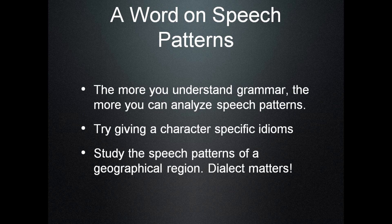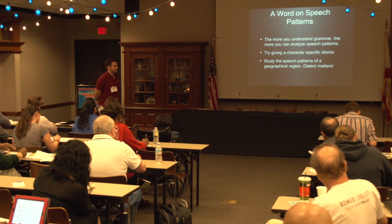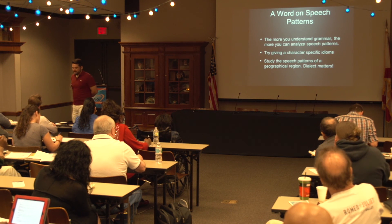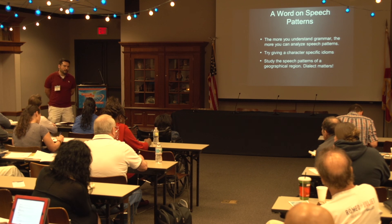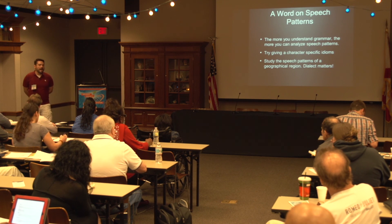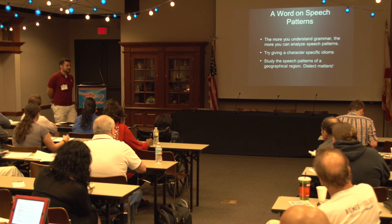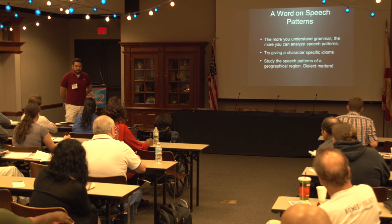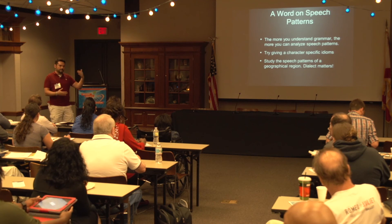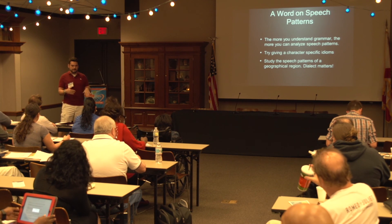Another technique that works really well is to give a character a specific idiom — a specific way of saying things. For example, I once wrote a short stage play where a character spoke in lists all the time. He would say 'A, blah blah blah, and B, blah blah blah, and C, blah blah blah.' That was just how he spoke — he always itemized and broke down what he was saying in A, B, and C. That was a little quirk, and the other character in the play could spit it back at him sarcastically.